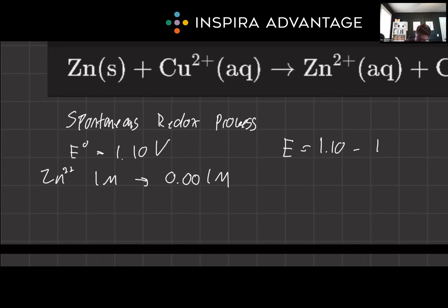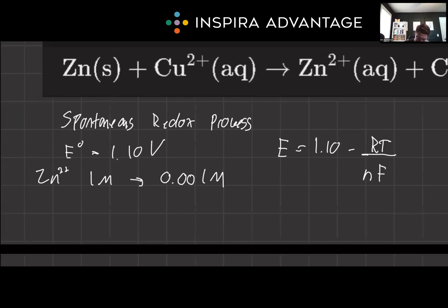Then we have RT, which we didn't say temperature is changing, so I'm just going to leave that there. N isn't changing. It's going to be 2 because we have plus 2 here, so that indicates two electrons are being moved. Faraday's constant is a constant, so that also won't be changing.